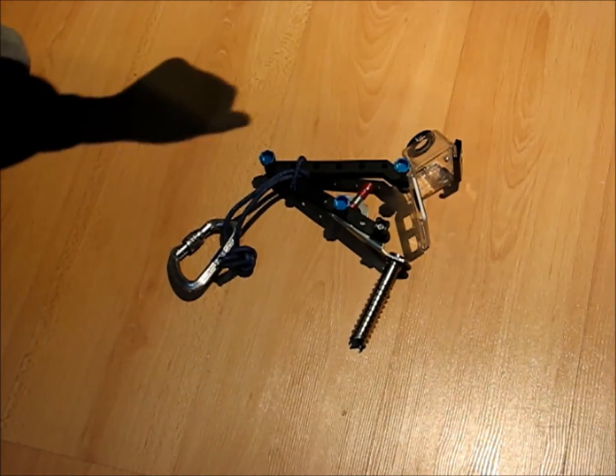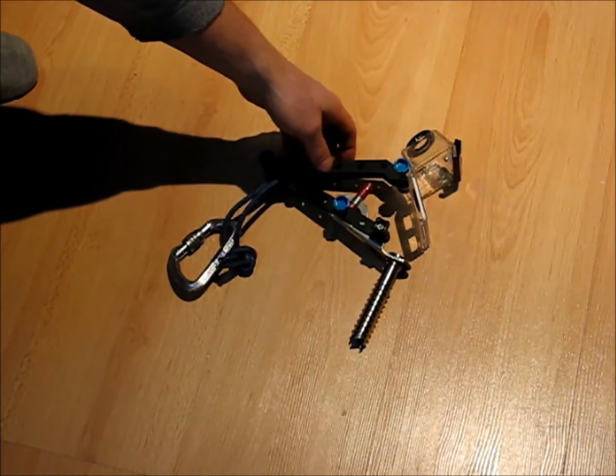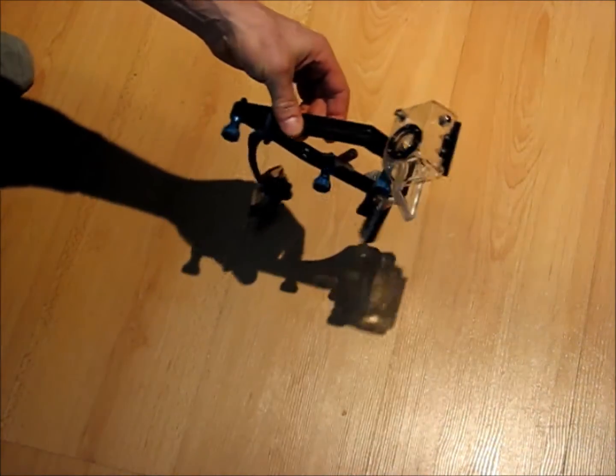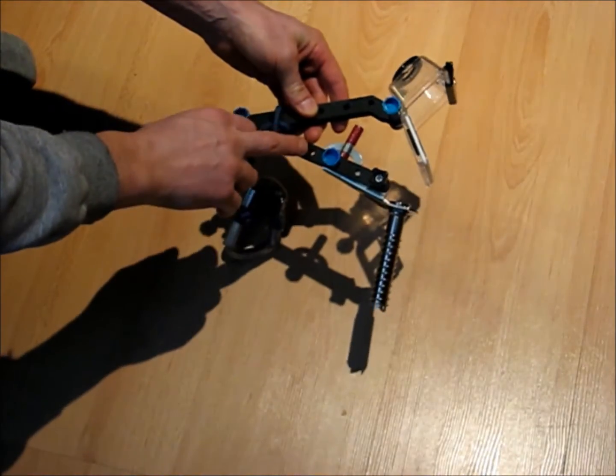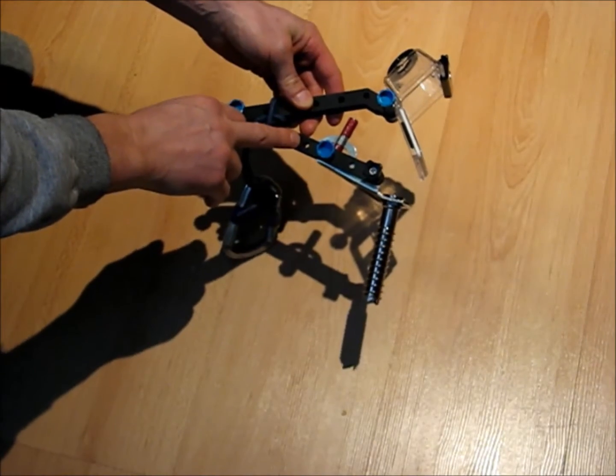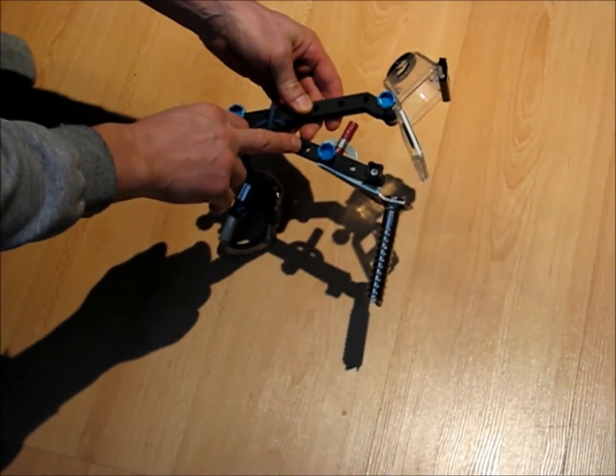Today I just wanted to show you what I used to videotape my ice climbing from above. These are aluminum arms. I got them off eBay for about 20 bucks.